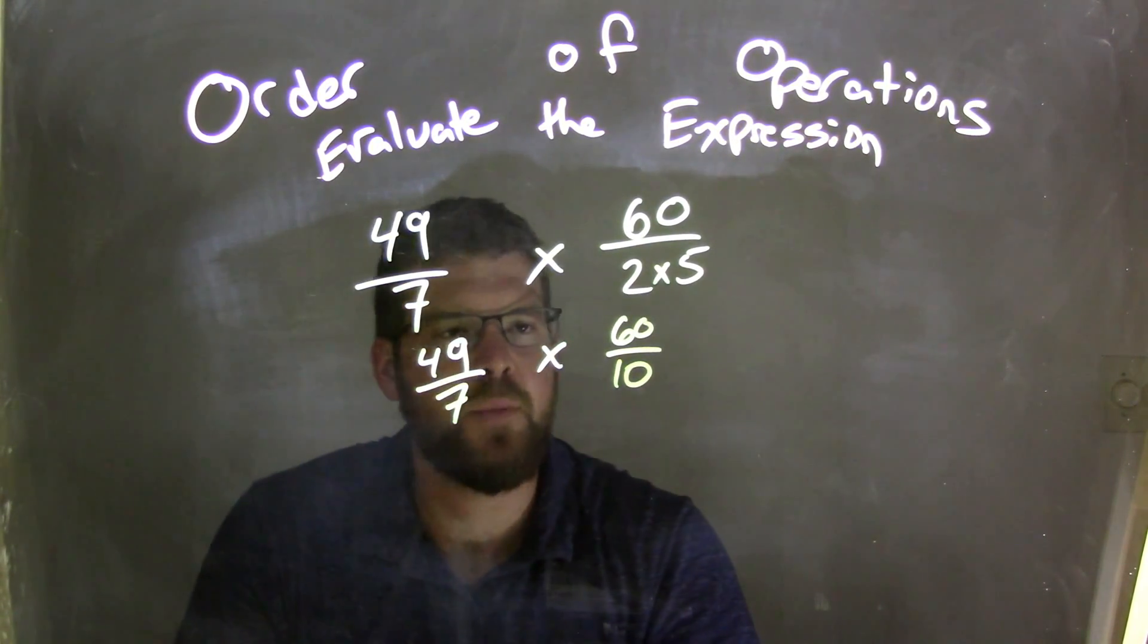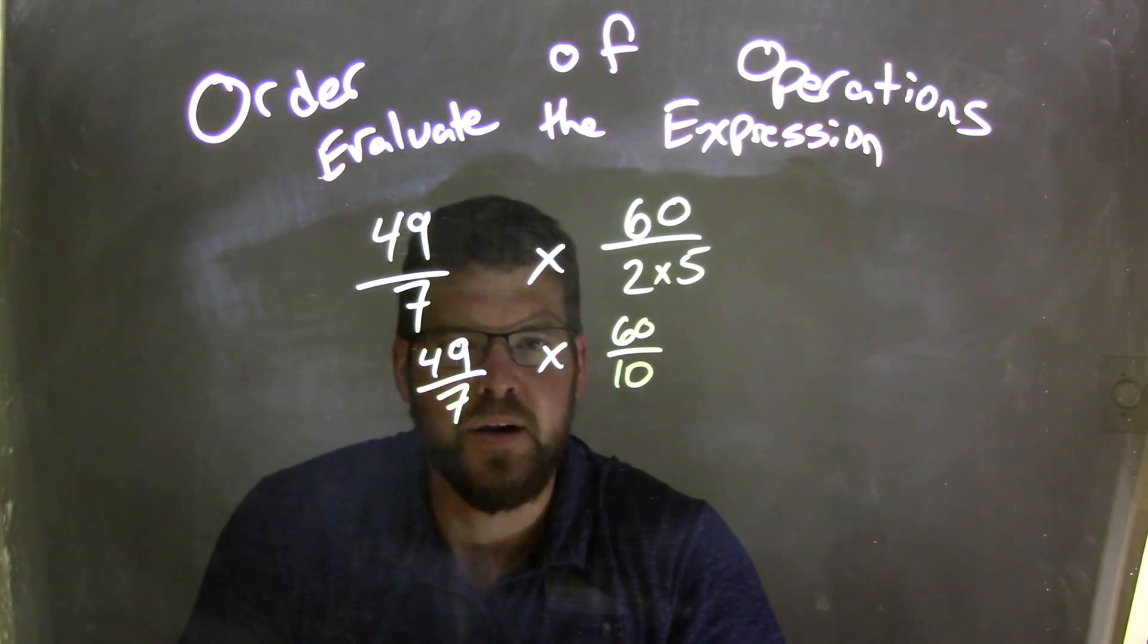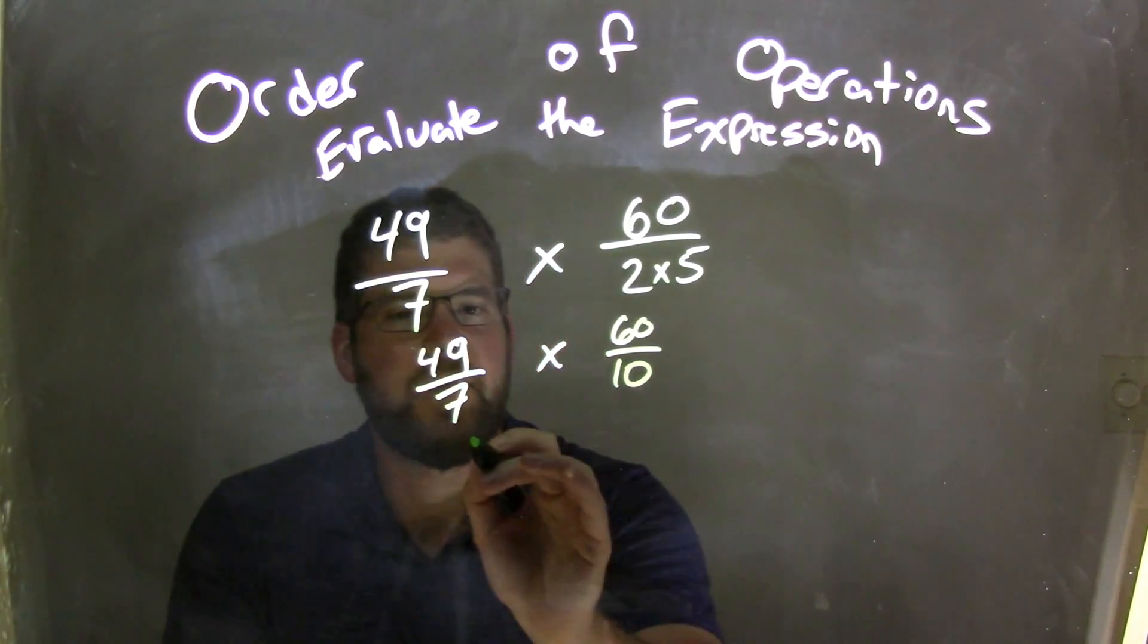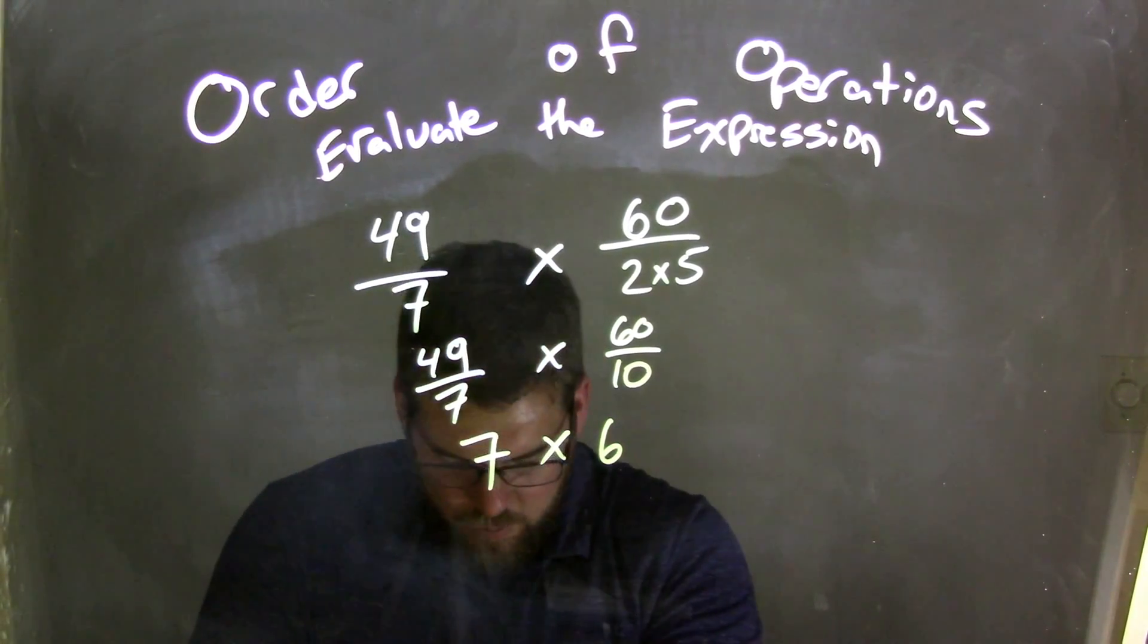So now we have 49 over 7 times 60 over 10. So let's go simplify both of these fractions, right? So 49 divided by 7 comes out to be 7, and 60 over 10 is 6. So now what we're